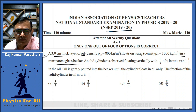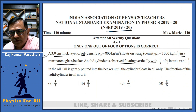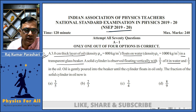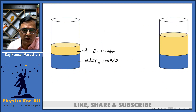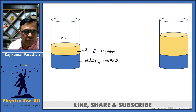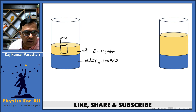According to the problem, a solid cylinder is floating with one third part in water and one third in oil. Let's draw it: one third part of the cylinder is inside oil, one third part is inside water, and the rest stays in air.